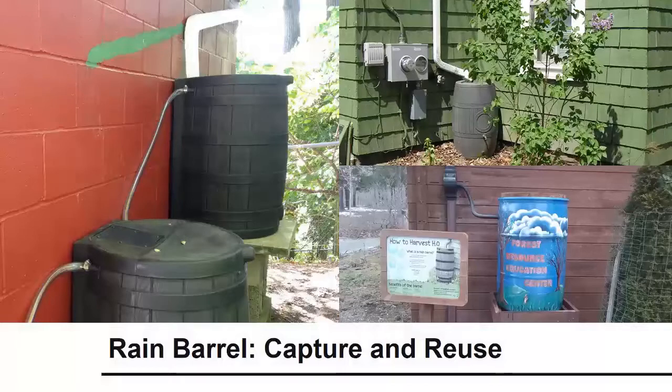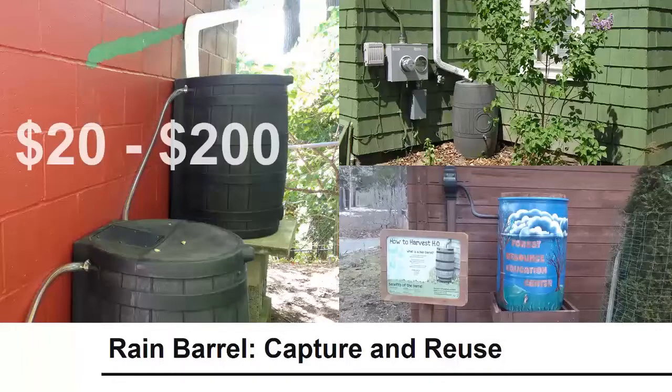Rain barrels are small vessels placed at roof downspouts. Installing a rain barrel may cost from $20 to $200 depending on connections and components. Maintenance includes draining and disengaging the system for winter.